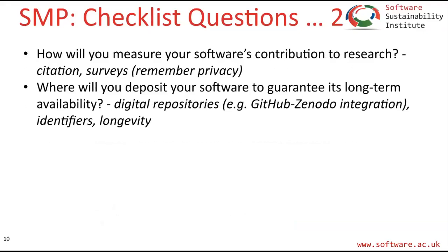Also, how would you measure your software's contribution to research? Will you have a citation mechanism, maybe built in or through a software paper? Will you be doing surveys of users? One has to remember privacy in that situation. And where will you deposit your software to guarantee its long-term availability? Will you put it in a digital repository that gives you an identifier and has made commitments to longevity? GitHub is excellent with many features, but for committed digital repository, something like Zenodo hosted at CERN would be quite useful — and there's a GitHub-Zenodo integration that's useful to know about.